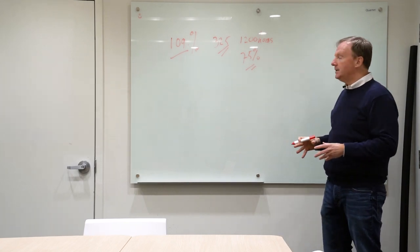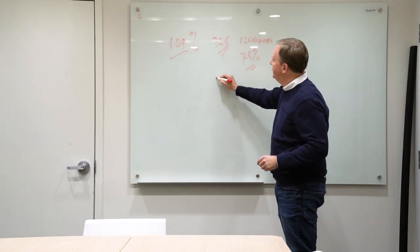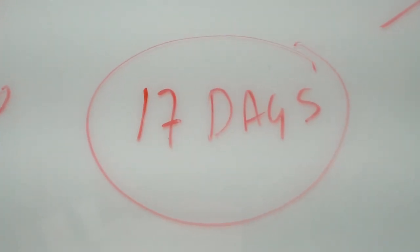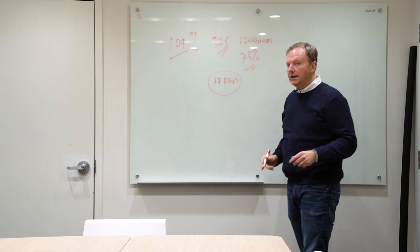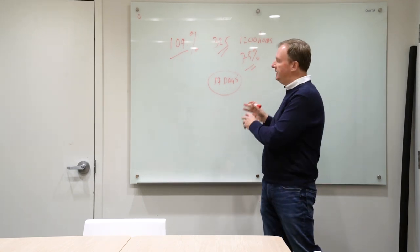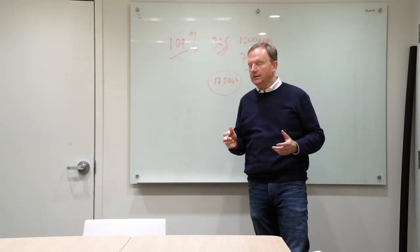Average market time is 24 days and we only have 17 days of inventory on the market and that means that if we don't list more houses in 17 days all of the inventory is gone.